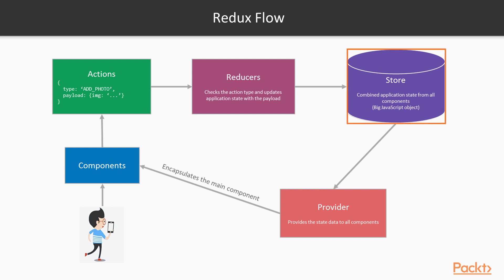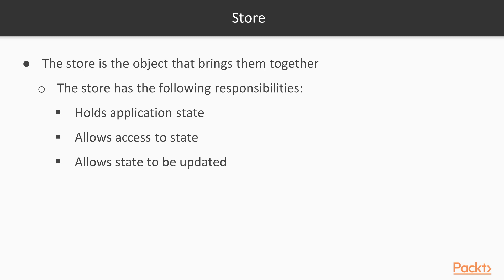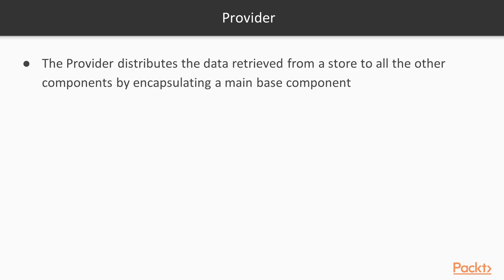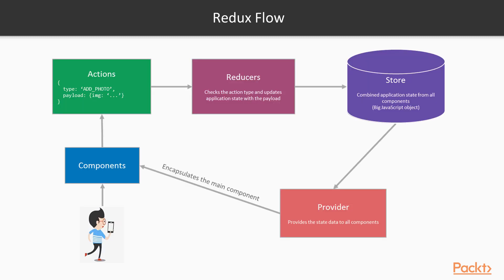After the reducer checks the action type, it updates the application state and stores it in the store. A store is basically a combined state management set — think of it like a database that has all your states. It's a very big JavaScript object with all the component states stored in it. The provider basically distributes all the state data to all the components in your app. It encapsulates the main view component and through that distributes data to all other components, so all components have access to each other's state. You don't have to pass down state via props — you can just easily access any state object of any component.